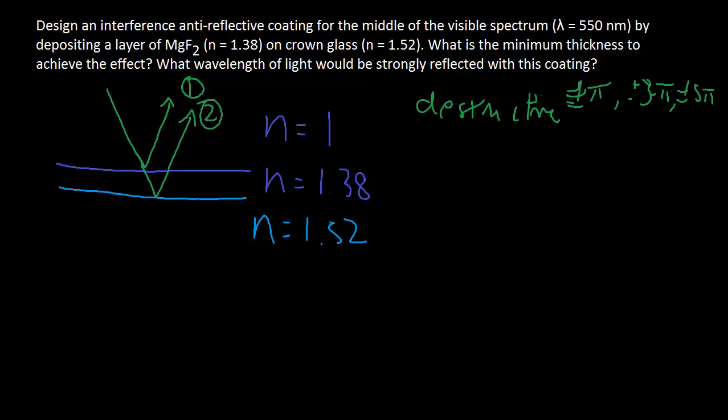So, for number 1, φ₁ here, that's going to be equal to π, because you're going from n of 1 to n of 1.38, low to high π.